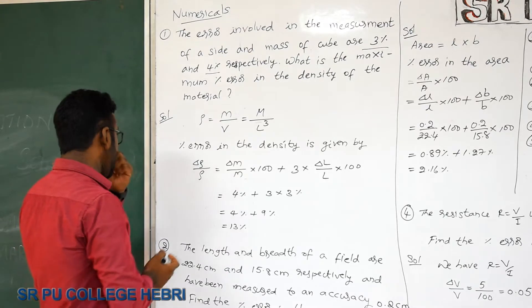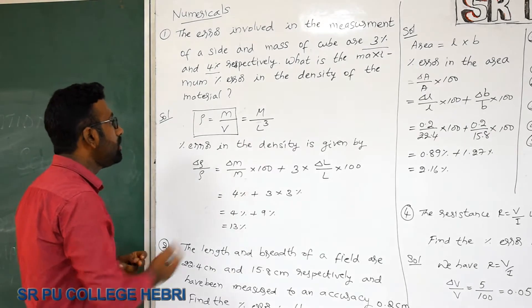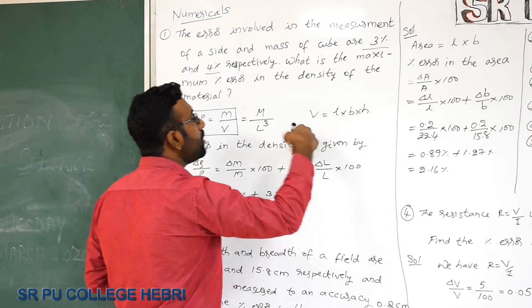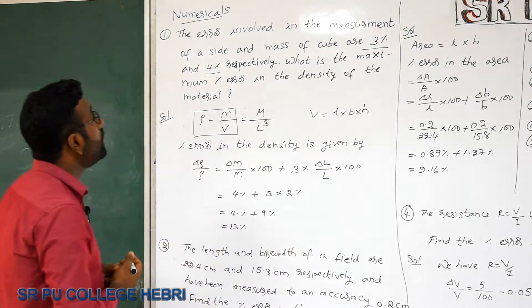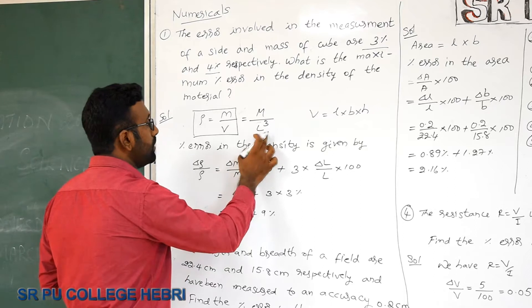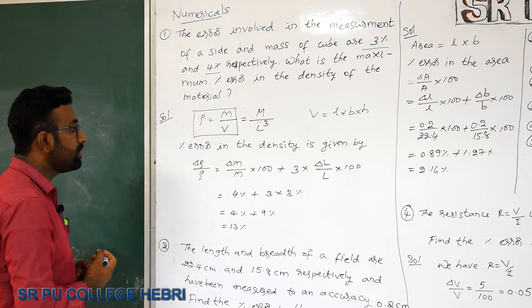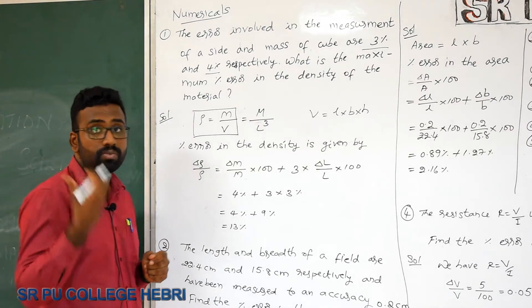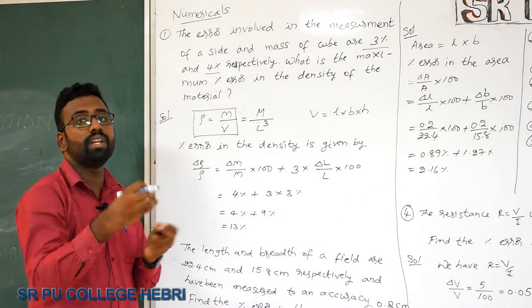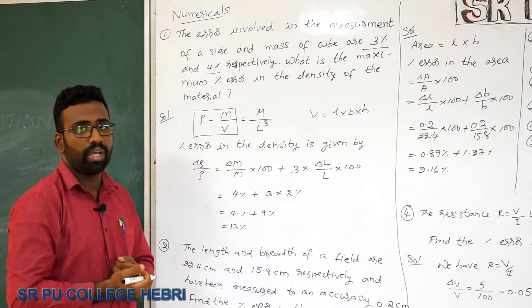You know the formula — density (ρ) is equal to mass divided by volume. Volume is length × breadth × height. Since it is a cube, all sides are the same, so volume = l³. To find the percentage error in density, the percentage error in the final answer is the sum of percentage errors in the individual values.